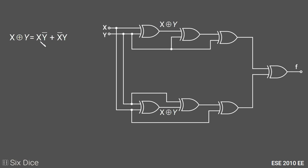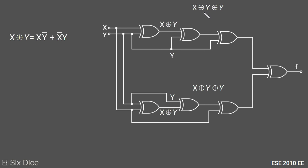x XOR y is defined as xy̅ + x̅y. Now in the second XOR gate, we are also feeding input y, so the output of the second XOR gate will be x XOR y XOR y.